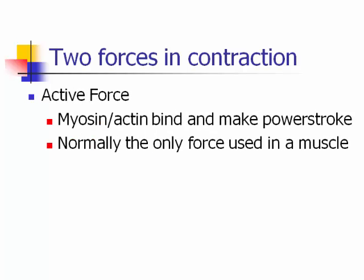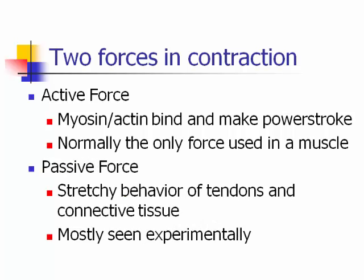Two forces in contraction: active force is when myosin and actin bind and make a power stroke — normally the only force used in a muscle. Passive force is seen in the frog PhysioEx experiment, where the frog muscle is pulled beyond its active range, revealing the elastic/stretchy behavior of tendons, connective tissue, and elastic fibers inside the muscle — like a rubber band bouncing back. In real life, joints prevent passive force from occurring.